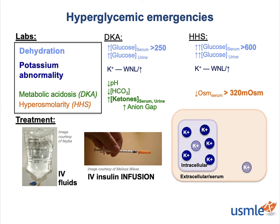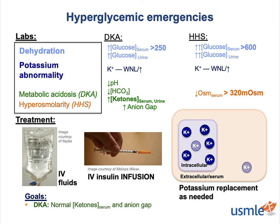For either DKA or HHS, how do you know when to stop pounding them with IV insulin? You're not waiting for the serum glucose to correct itself. The endpoint that most effectively tells you that you're out of the danger zone is when you fix the metabolic issue causing most of the problems: ketoacidosis in DKA, estimated by normalization of the anion gap, and hyperosmolarity in HHS.